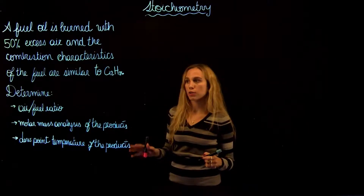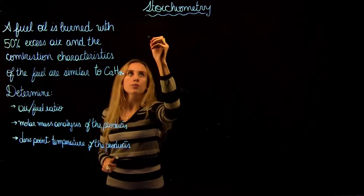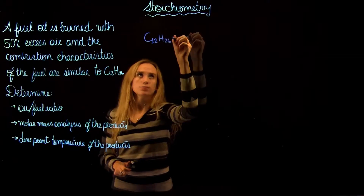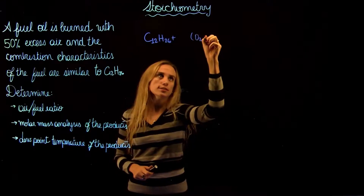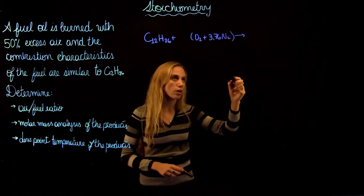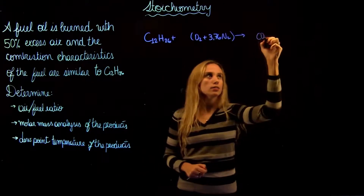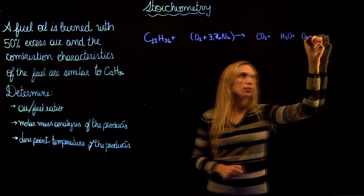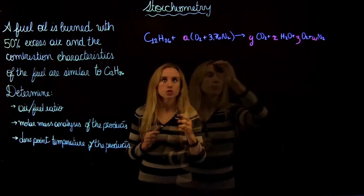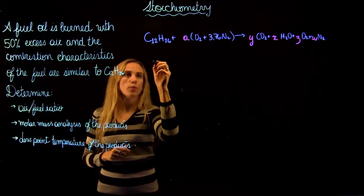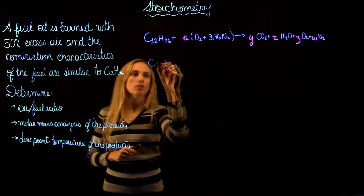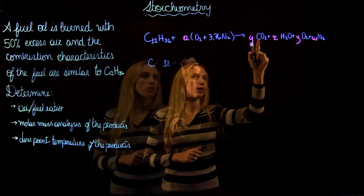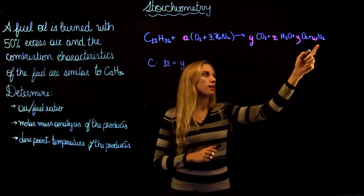Now if we write our combustion reaction, we're going to have C12H26 plus oxygen from air, and the products of combustion are CO2 plus water plus oxygen plus nitrogen. We need to find the values, so we write equations for each component. For carbon, C, we have 12 in the reactants, and on the product side we have Y.